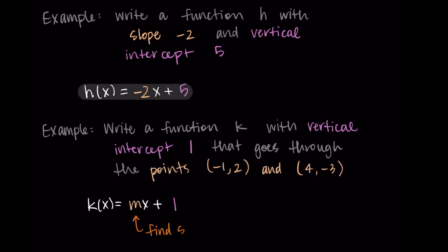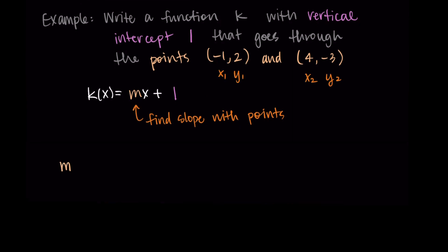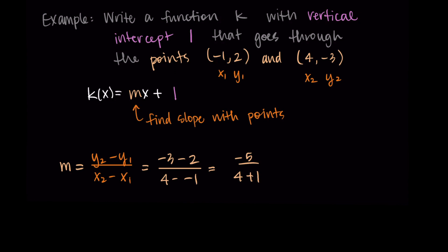We find the slope using the two given points. The formula is m = (y₂ - y₁)/(x₂ - x₁). Letting (-1, 2) be (x₁, y₁) and (4, -3) be (x₂, y₂), we get m = (-3 - 2)/(4 - (-1)) = -5/(4 + 1) = -5/5 = -1. So our slope is negative 1.